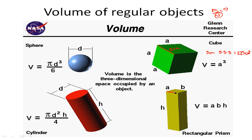Let's do a rectangle. For a rectangle, we would have to know its length, width, and height. So let's say its length is 2 cm, its height is 10 centimeters, and its width is 2 centimeters. So we would go 2 times 2 times 10: 2 times 2 is 4, times 10 is 40 — 40 cm cubed. For regular objects, if you know the formula you just plug in the numbers. If you don't know the length, you can always measure it using a ruler.